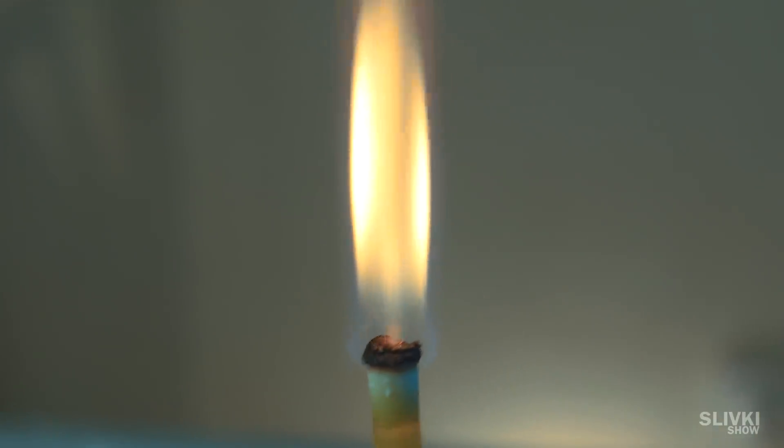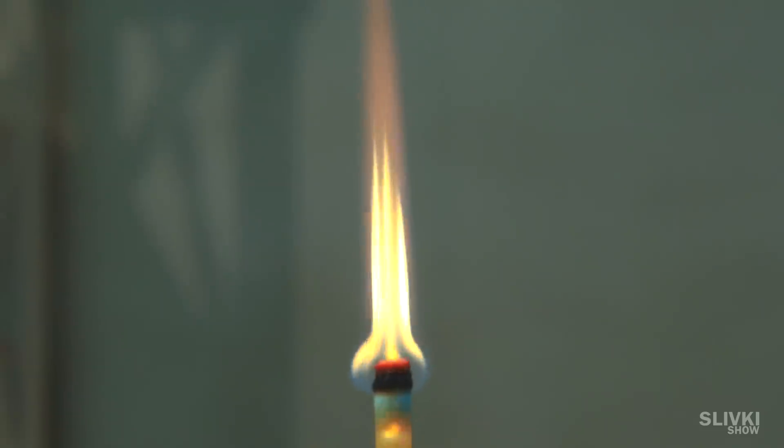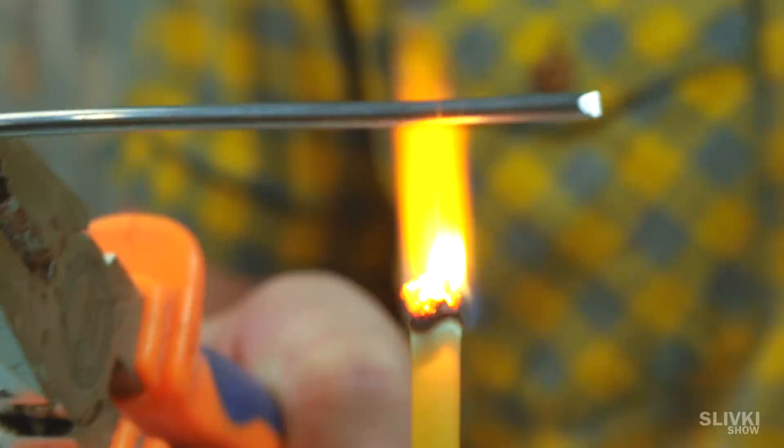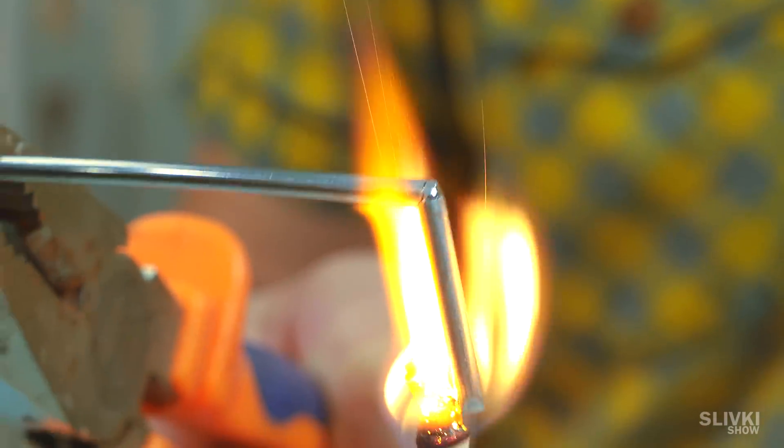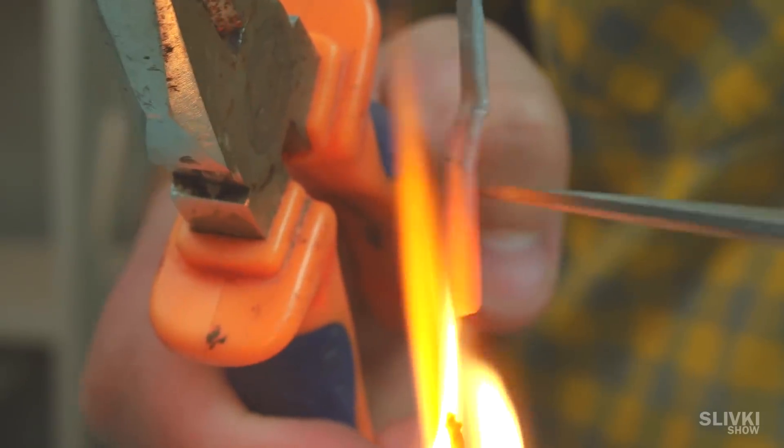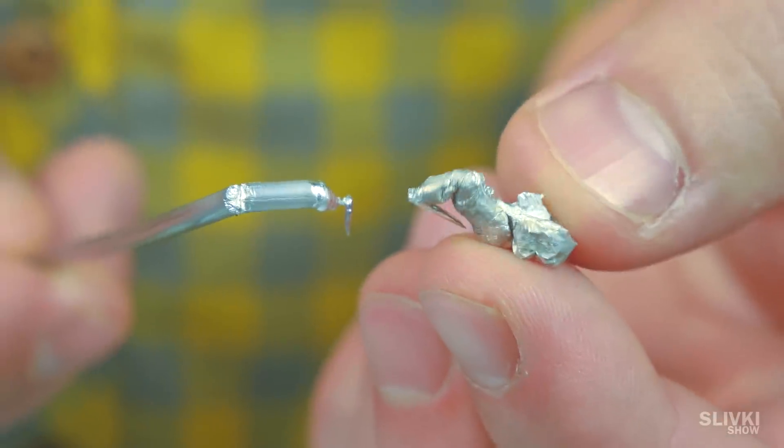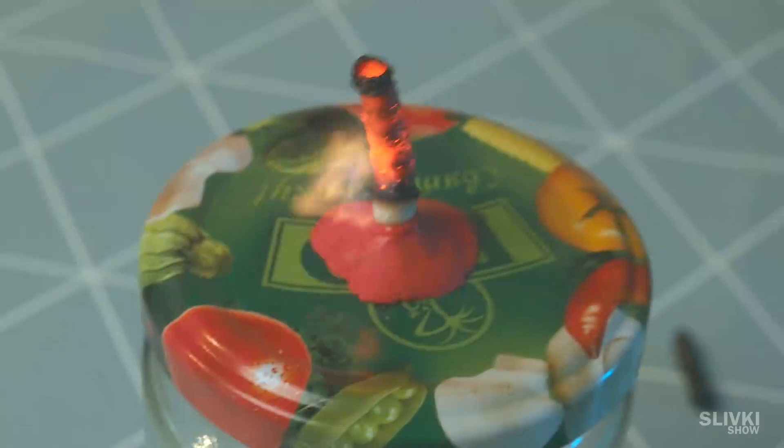That's how we made a hybrid reactive engine. On the same principle, rockets fly to space. The flame is so hot that it can melt aluminum cords easily. Even extinguishing was pretty hard.